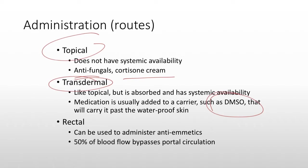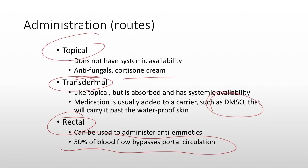There's also rectal administration of some drugs. Sometimes people are vomiting way too much and you can't give them something orally, so you have to give it to them rectally. This is done oftentimes with antiemetics. Another thing you have to be aware of is that if you do rectal administration, 50% of the blood flow in this area is going to bypass first-pass metabolism.